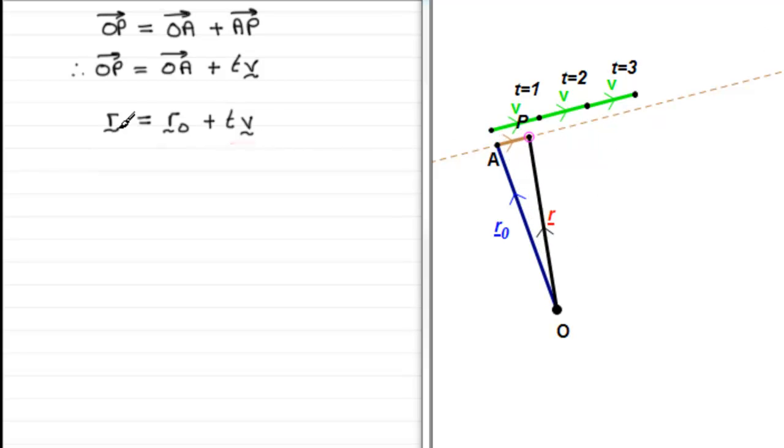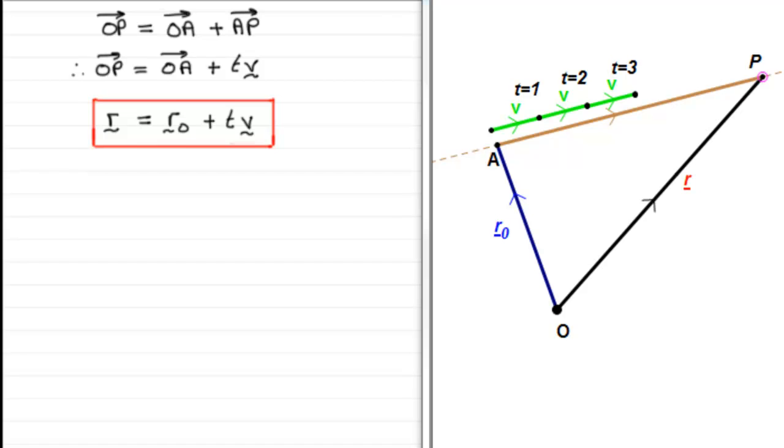So I would suggest then that you do try and remember this formula as it gives the position vector then of the point P at time t. Now what I'd like to show you is a quick simple example just to demonstrate how we use this particular equation.